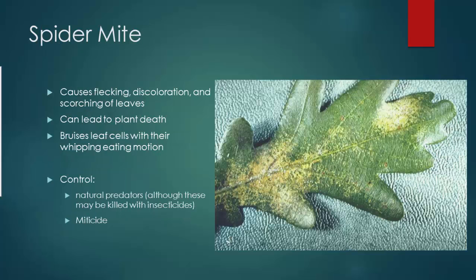Spider mites are tiny mites — usually you will see the damage well before you see the mite. They do make a web somewhat like a spider, but it is actually a mite, so you would use miticide to control it. It causes flecking, discoloration, scarring, and scorching of leaves. It can lead to plant death, so it's important to diagnose this problem early on in order to correct it.